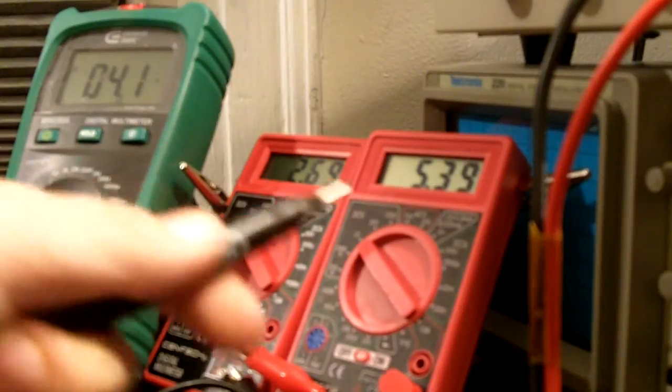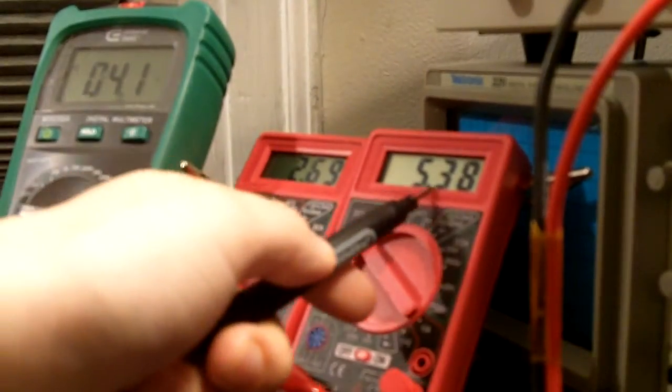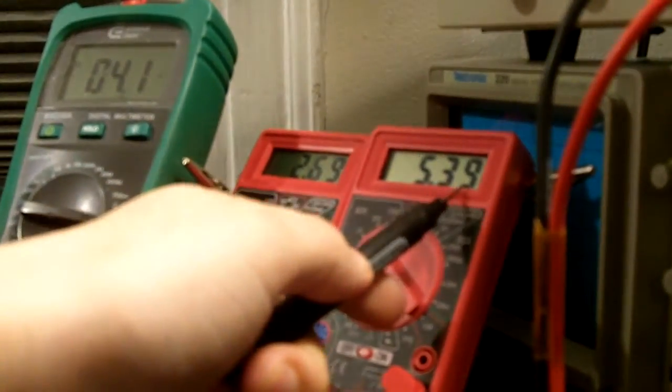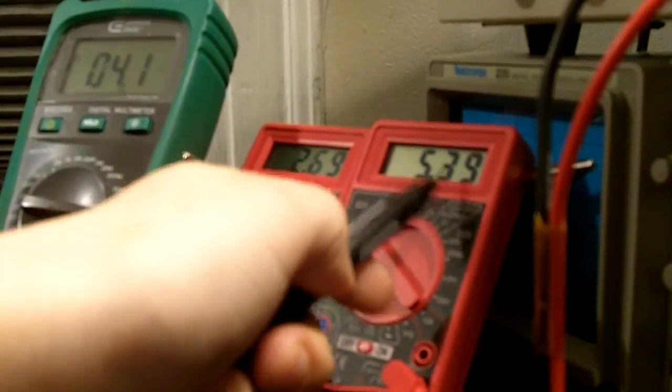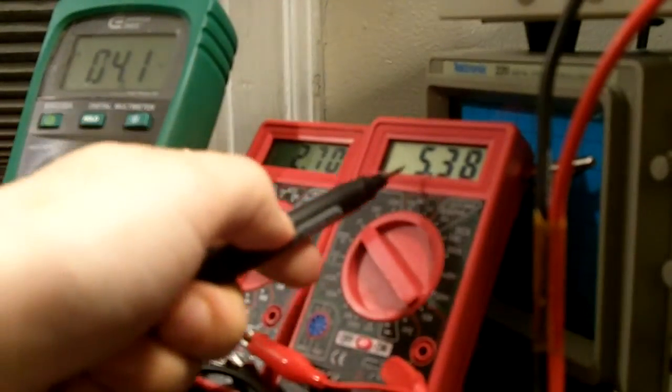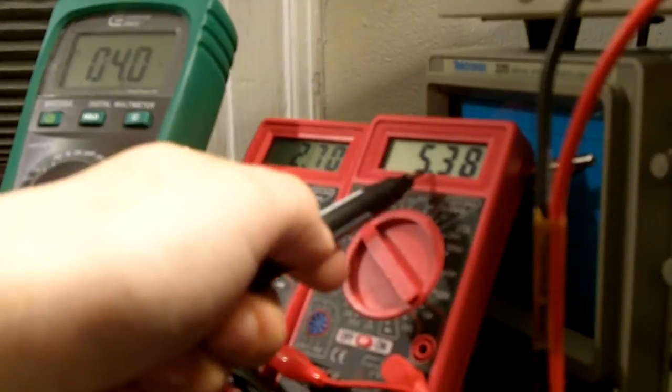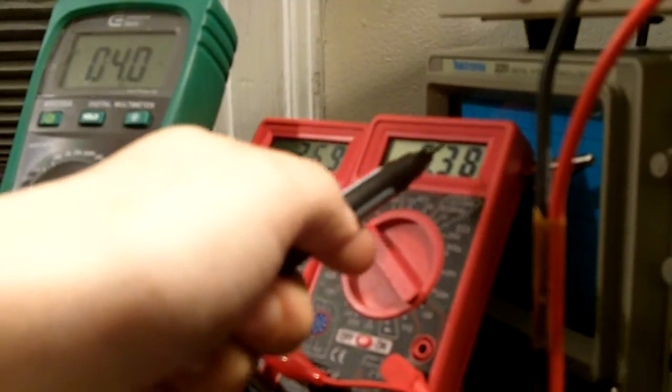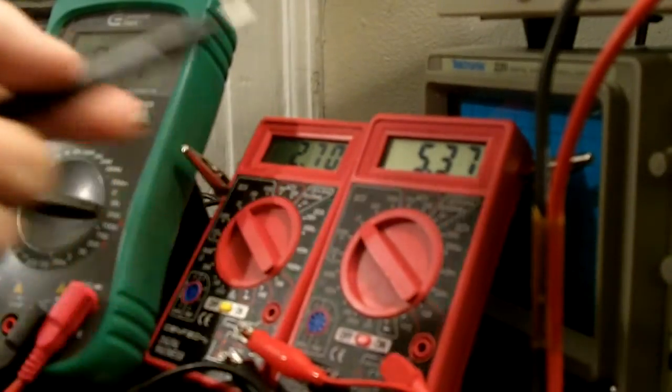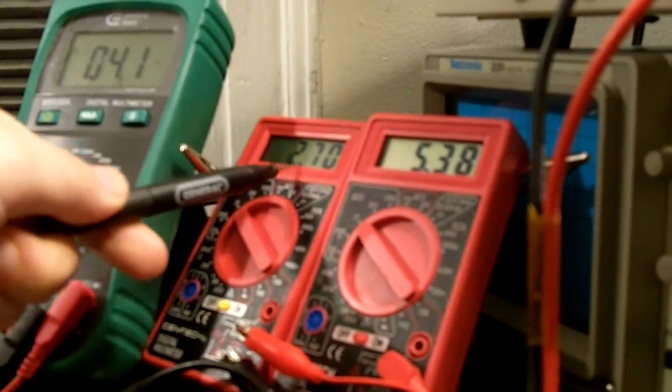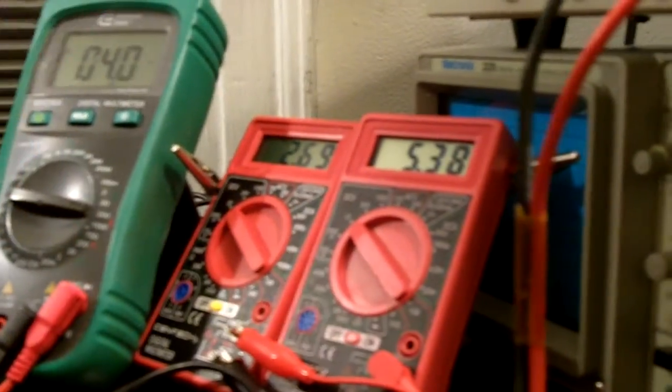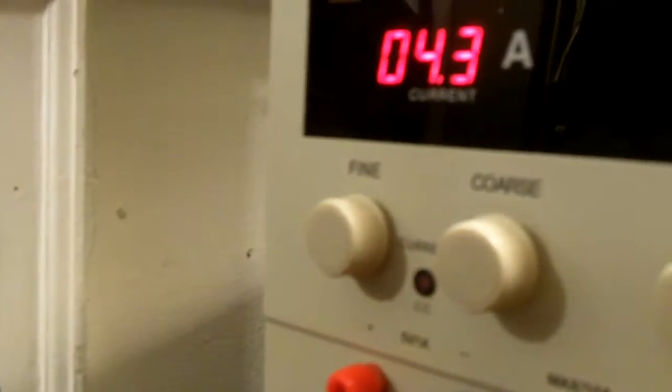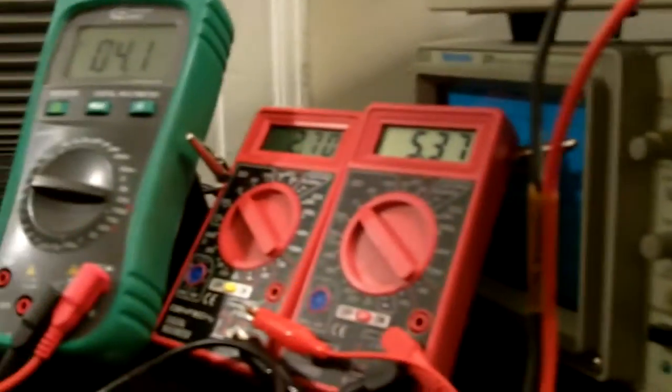So we're at 2.7 amps. The load is 5.4 volts. This is going to be much higher than a 9 millimeter diode right now. A 9 millimeter diode will probably be around 5.1 volts or around 5 volts. And, okay, 2.7 we're at 4.1 and we're only drawing 4.3 amps.